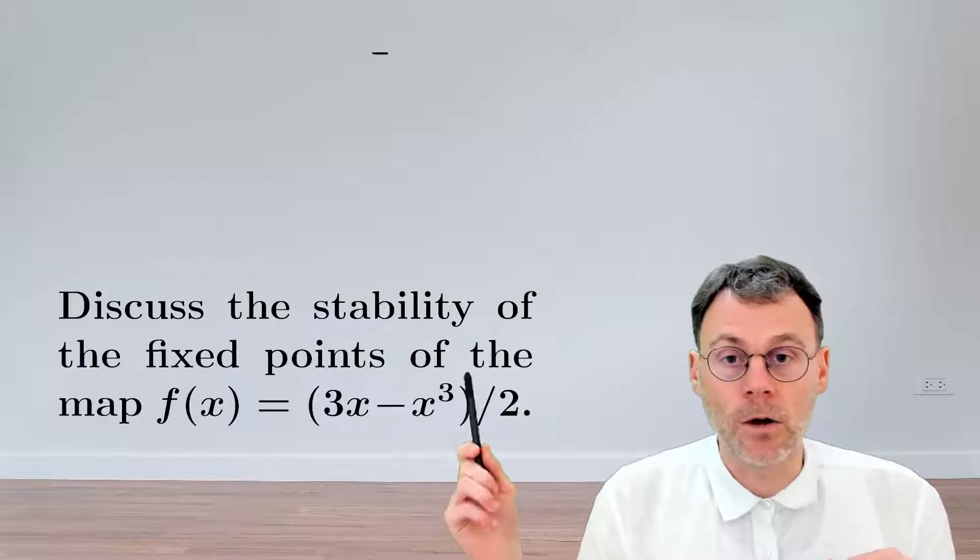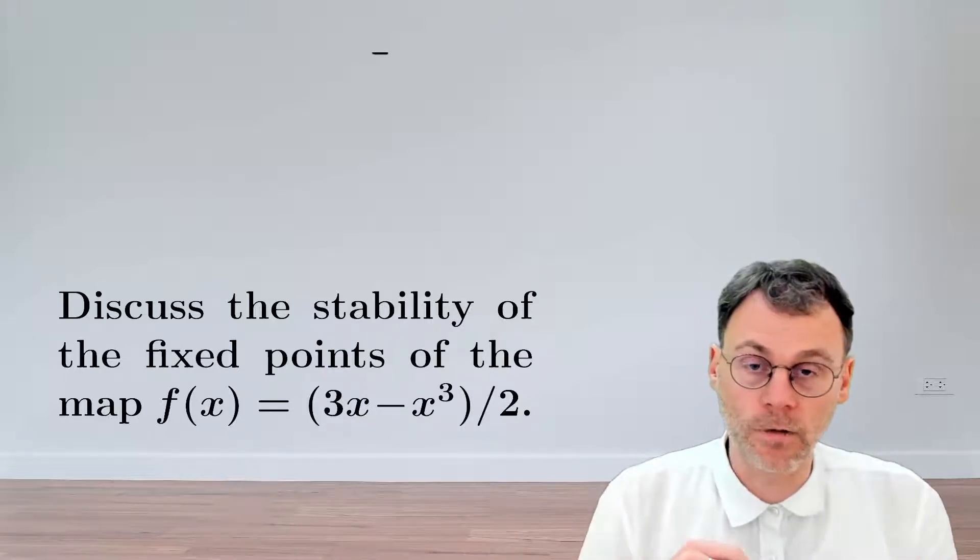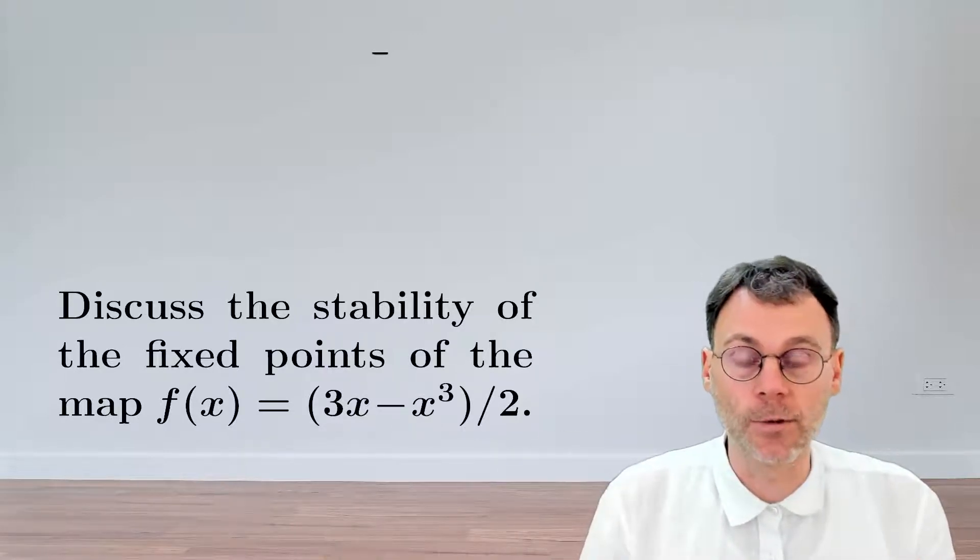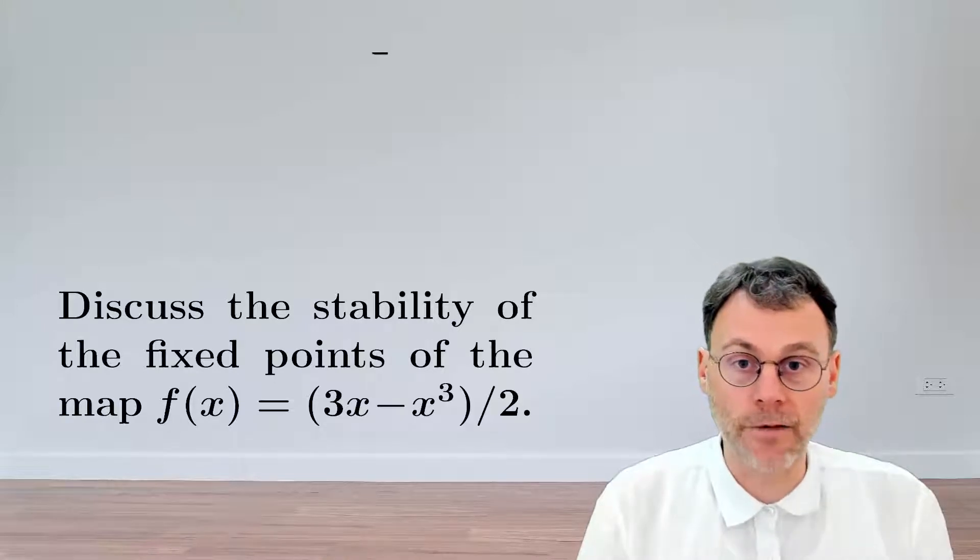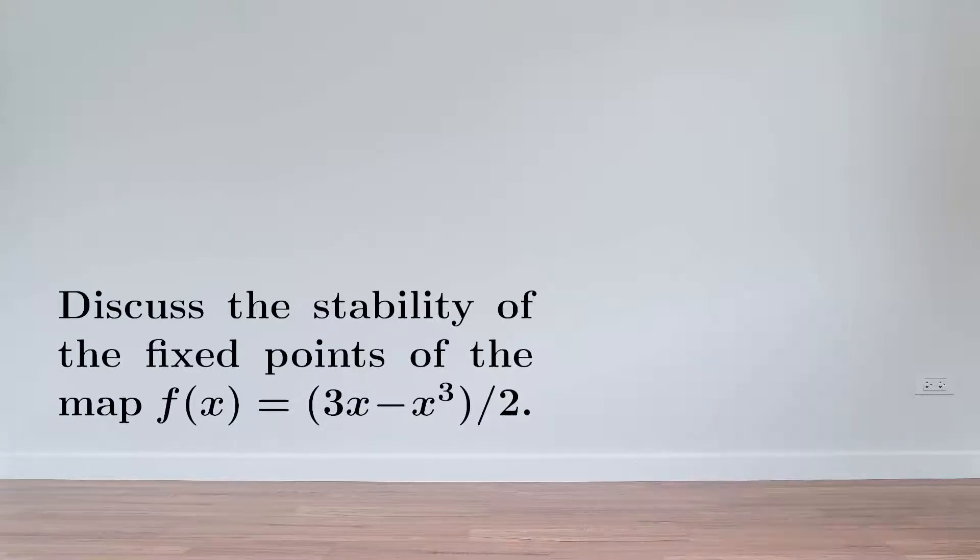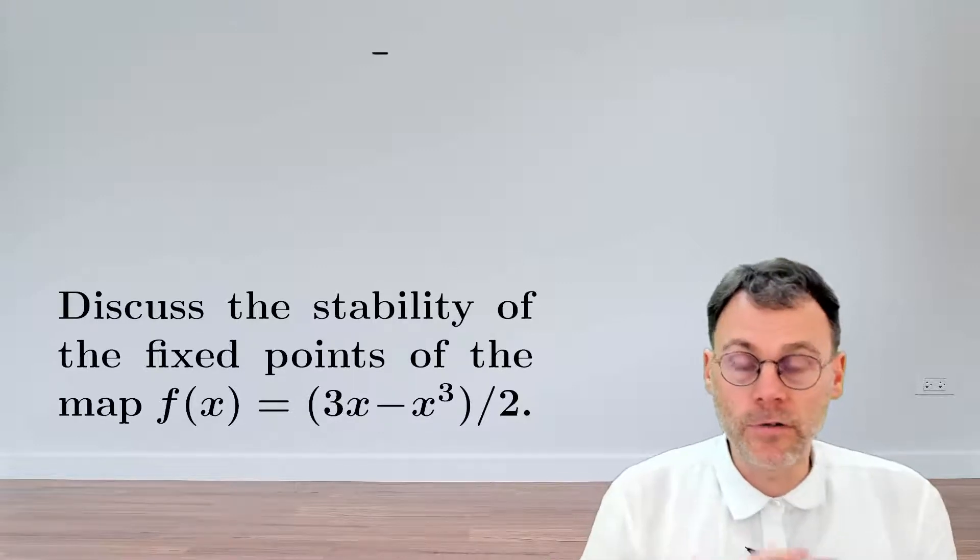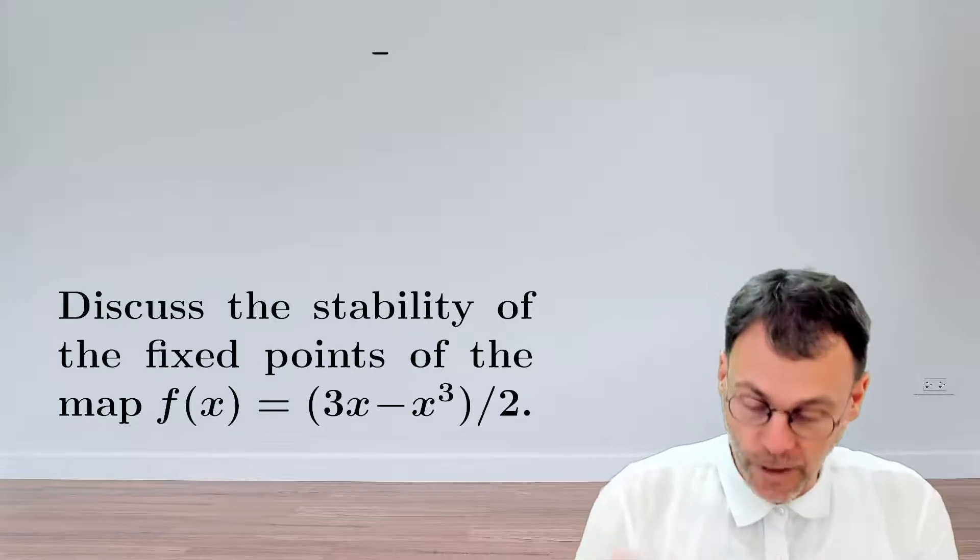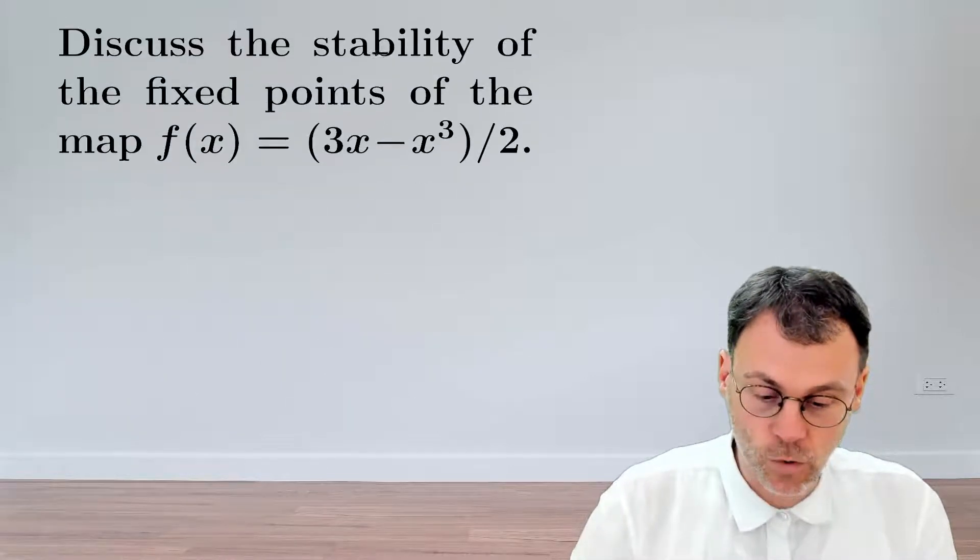Here we have a map - are the fixed points of this map stable or unstable? Pause the video and have a go at this. In a previous exercise, we calculated the fixed points of this map, which were zero and plus or minus one.